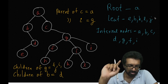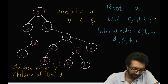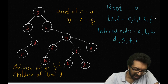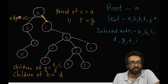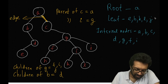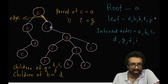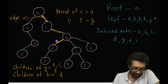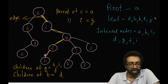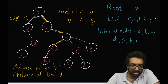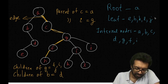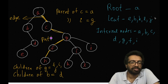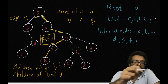We have missed one important terminology. The line which connects A and C is called an edge. Similarly, C and G form another edge, G and F form another edge, and F and H form another edge. These edges form what is called a path. A path is formed by a series of edges.